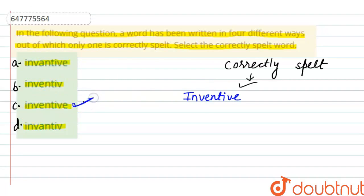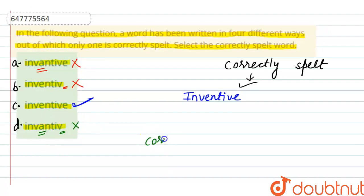तो Third Option जो होगा वो Correct हो जाएगा. देखते हैं बाकी क्या Option दिए हैं वो Wrong क्यों होंगे? जैसे कि First Option में हमें E की जगह पर A दे रखा है, तो यह Wrong Option हो जाएगा. और यहाँ पर Last में E नहीं दे रखा है, तो यह भी Wrong हो जाएगा. तो हमारे लिए जो Correct Option होगा, जिसकी Spelling एकदम Correct है, वो हो जाएगा Option Number C, that is Inventive.